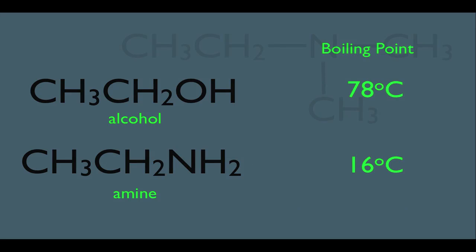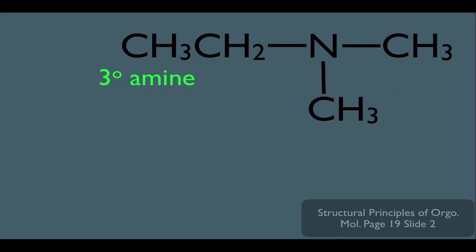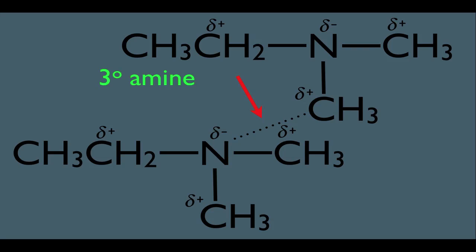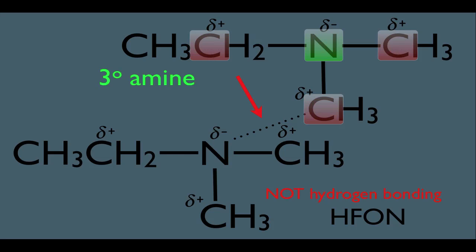However, be careful — this is a tertiary amine. Looking at the polar bonds here: nitrogen is more electronegative than carbon, giving us partial negative and positive charges. If we have two identical tertiary amines, the attraction would be between the partially negative nitrogen of one and the partially positive carbon of the other. However, this is not hydrogen bonding. We only have hydrogen bonding when H is covalently bonded to F, O, or N. In this tertiary amine, the nitrogens are directly bonded to carbons instead of hydrogens. Therefore, tertiary amines have much lower boiling points than primary and secondary amines, which can participate in hydrogen bonding because they have at least one nitrogen covalently bonded to a hydrogen.